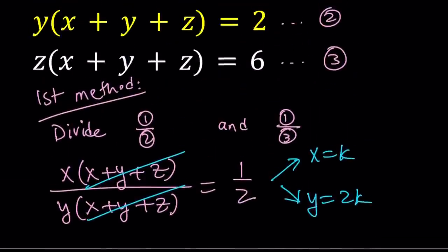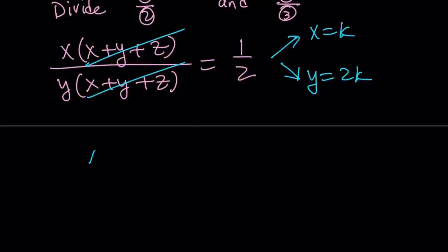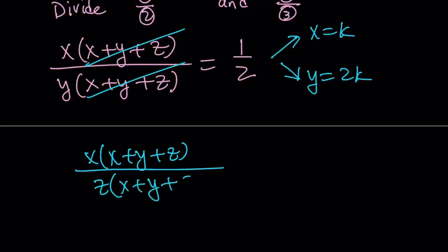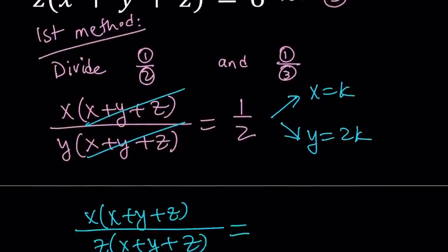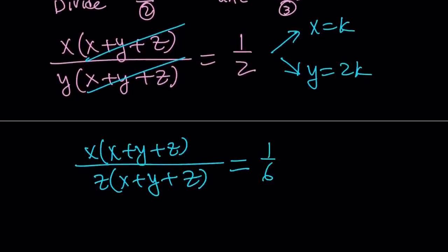Let's go ahead and do first and third now. Now, we have x times x plus y plus z and that is divided by z times x plus y plus z and that should equal 1 over 6. Now, the same thing happens here when x plus y plus z cancels out. We get the ratio of x to z as 1 over 6. Great. So from here, we can safely say that x equals k and z equals 6k. So here's the thing. Here's the critical part. Sometimes with ratio and proportion problems, you don't get the same thing for x, but here we did.